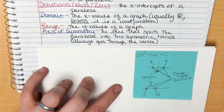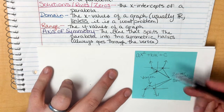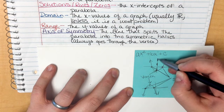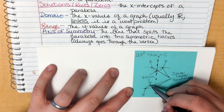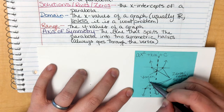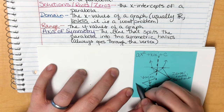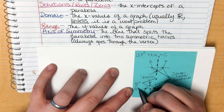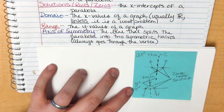The axis of symmetry is the line that splits the parabola into two symmetric halves, and it always goes through the vertex. In one example the y-axis is the axis of symmetry; in another, it is a vertical line through the vertex. I generally abbreviate it as AOS.